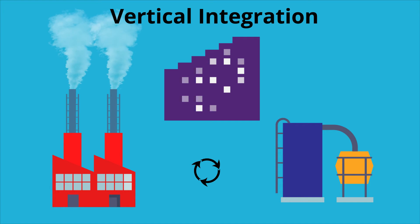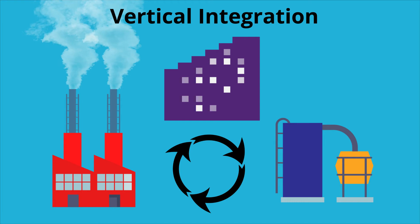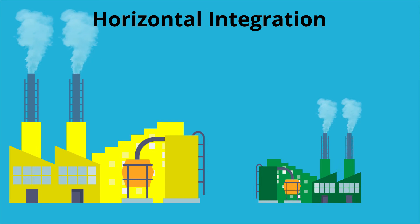Vertical integration is when one company has control of all or most of its supply chain. For example, a company can be vertically integrated if they manufacture, distribute, and sell all their products without working with outside entities. Horizontal integration is when one company buys or merges with another company that produces a similar product. An example of this would be if one soda company purchased another soda company.